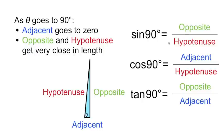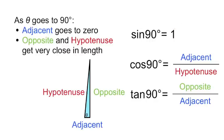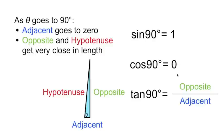Sine is opposite over hypotenuse, and as theta goes to 90 degrees, opposite and hypotenuse get very close in length. So let's replace the opposite in the numerator with hypotenuse — hypotenuse over hypotenuse is 1, so the sine of 90 degrees is 1. For cosine of 90 degrees, as theta goes to 90 degrees, the adjacent goes to 0. So let's replace adjacent with 0 — this means the cosine of 90 degrees is 0.